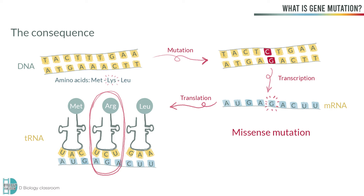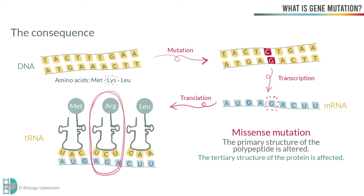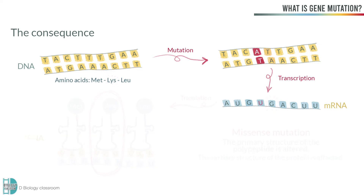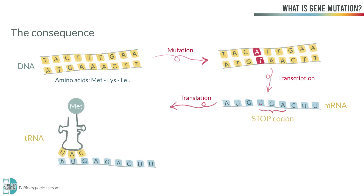The primary structure of the polypeptide being synthesized is therefore different, and it may affect the tertiary structure of the protein. Sometimes a stop codon may be introduced earlier, producing a shorter or incomplete polypeptide. When this happens, we call it a nonsense mutation.